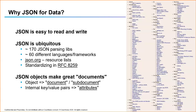This chart — it might be hard to see over the stream — is a list of JSON parsing libraries by programming language. It's widely supported by every technology out there. You might be surprised by some of the technologies that support JSON. JSON is a very good format; that's why it's most commonly used for document databases.